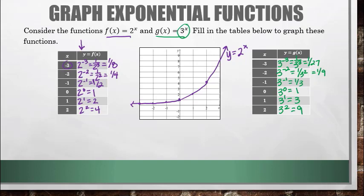When I go to graph these, we get the points: negative 3, 1/27; negative 2, 1/9; negative 1, 1/3; 0, 1; 1, 3; and 2, 9.